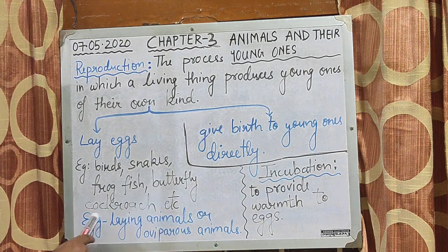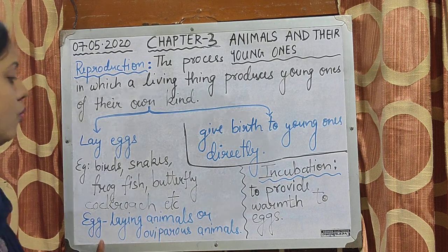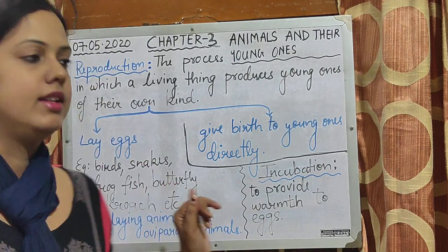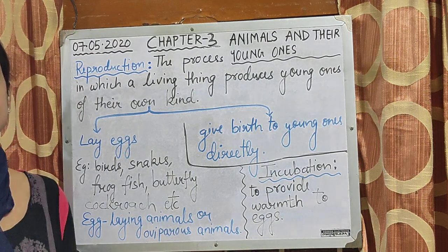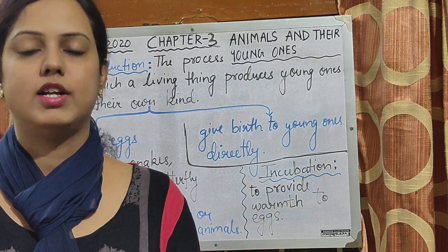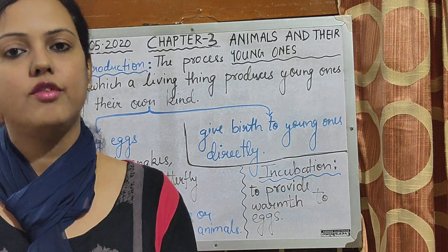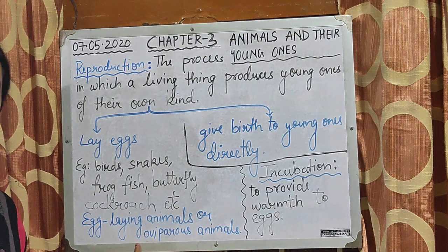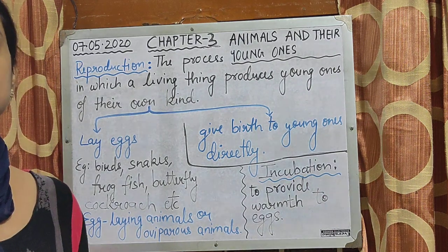These are the examples of egg-laying or oviparous animals. Once they have laid their eggs, these animals keep their eggs in a warm place. Because until and unless the egg is not getting warmness, it will not hatch into offspring. So eggs need warmness to hatch. These animals keep their eggs in a warm place or sit on their eggs to keep them warm.